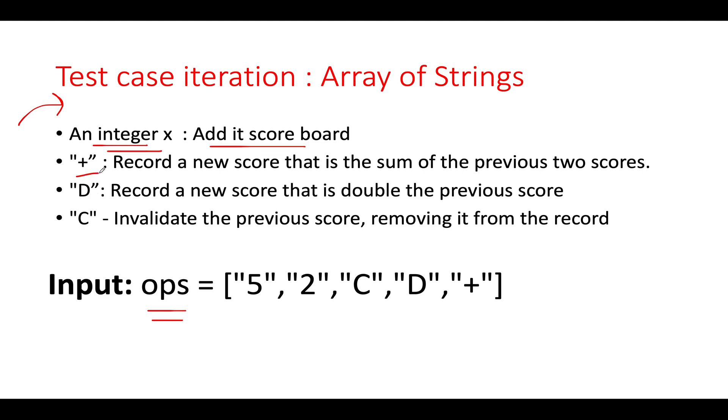If you see a plus value, what do you do? You extract the previous two scores, add them together and create a new score. If you see a string D, capital D, what do you do in such case? You extract the previous score, double it up and add it to your scoreboard.